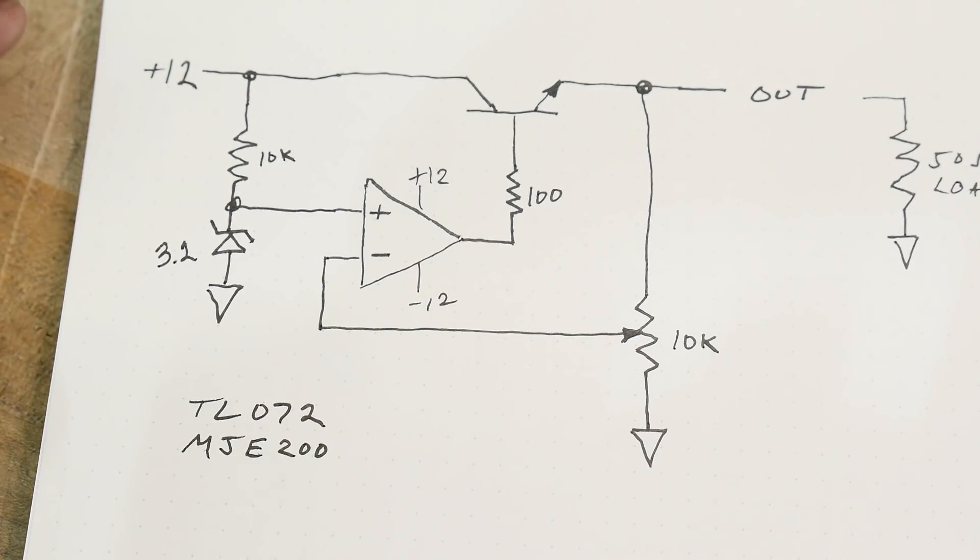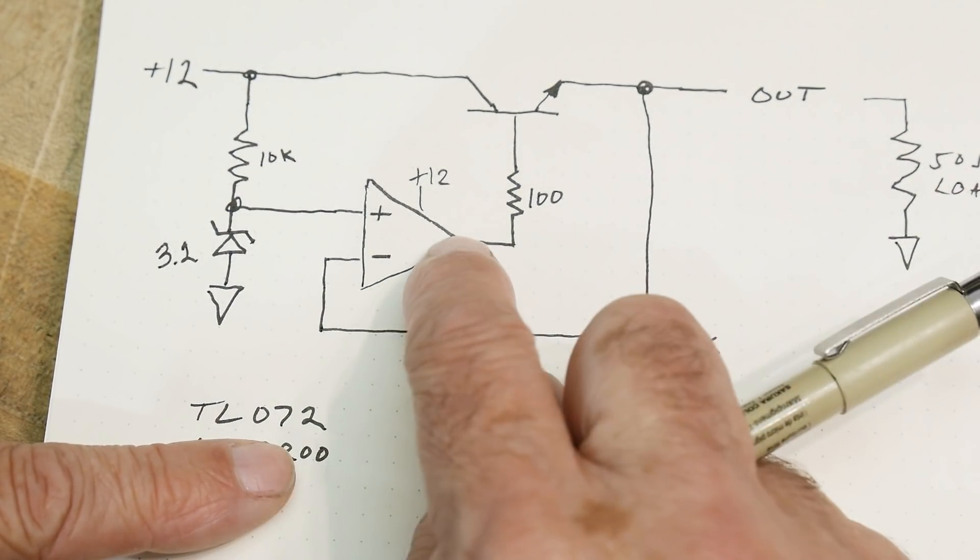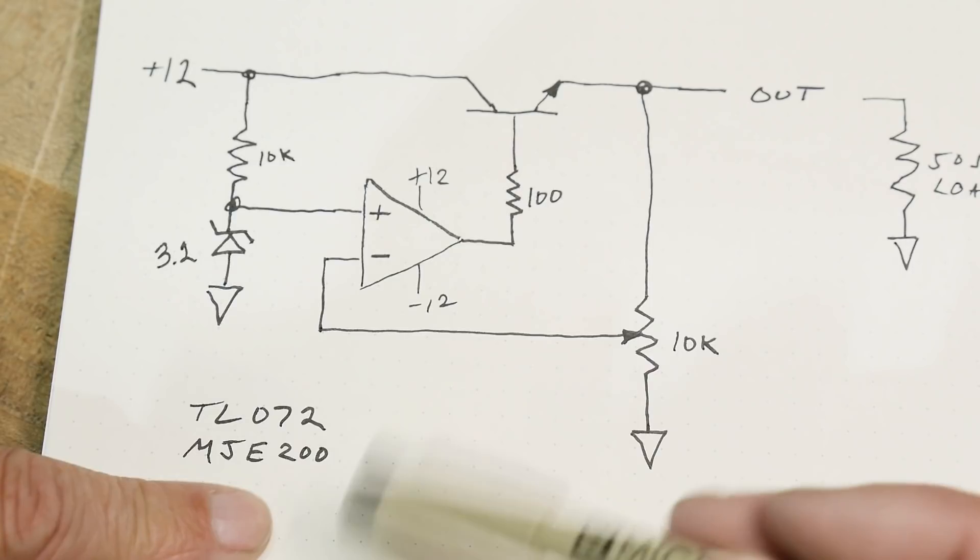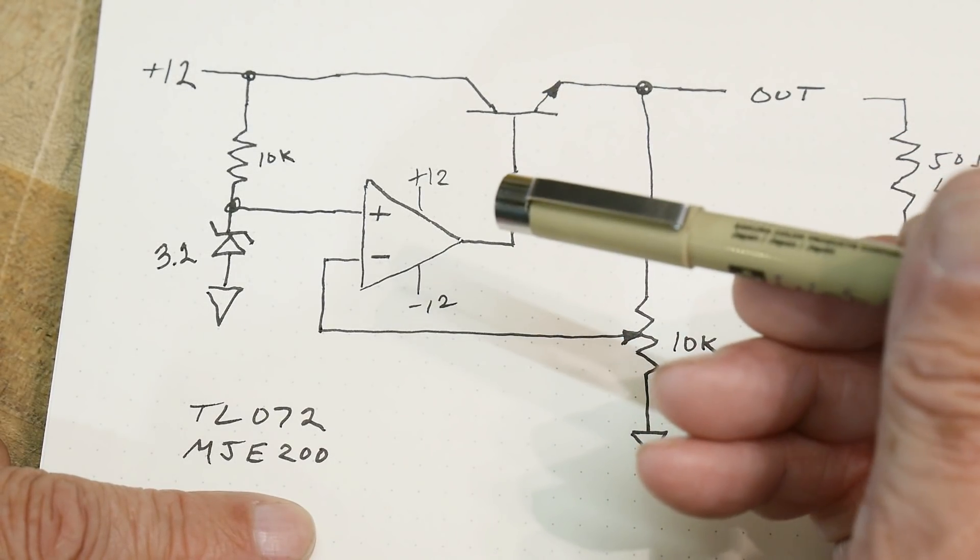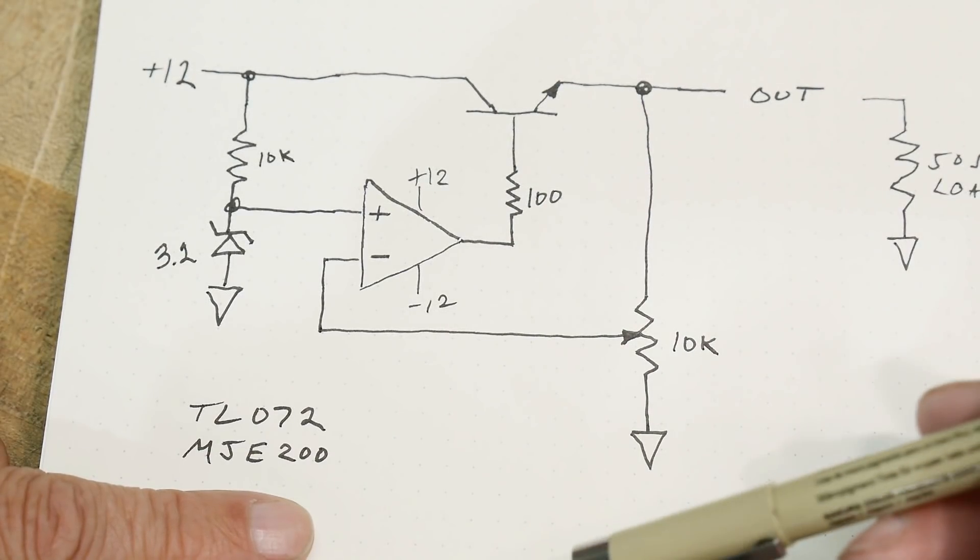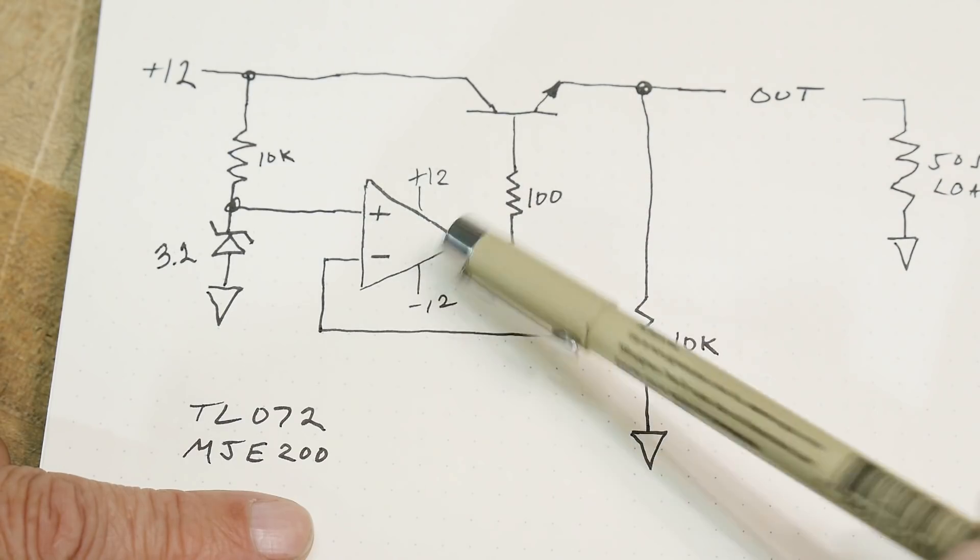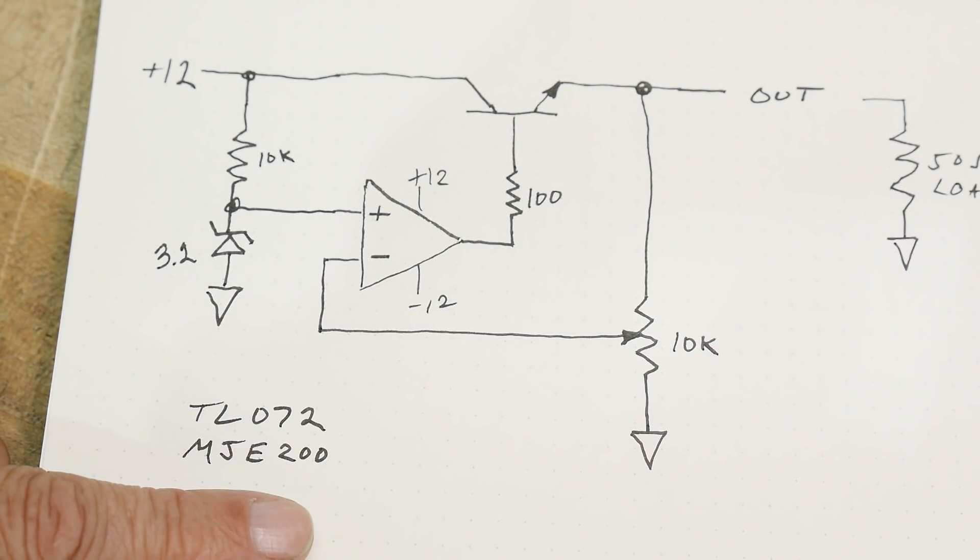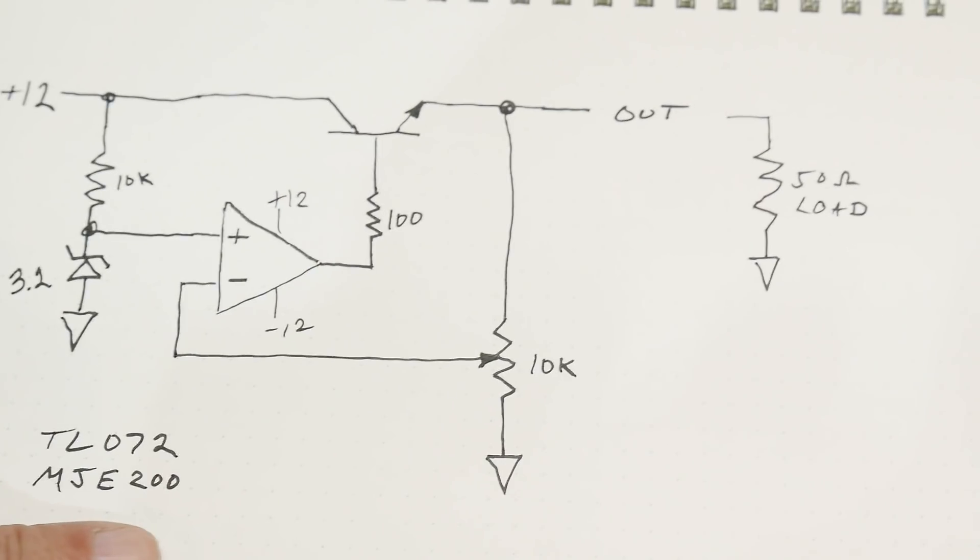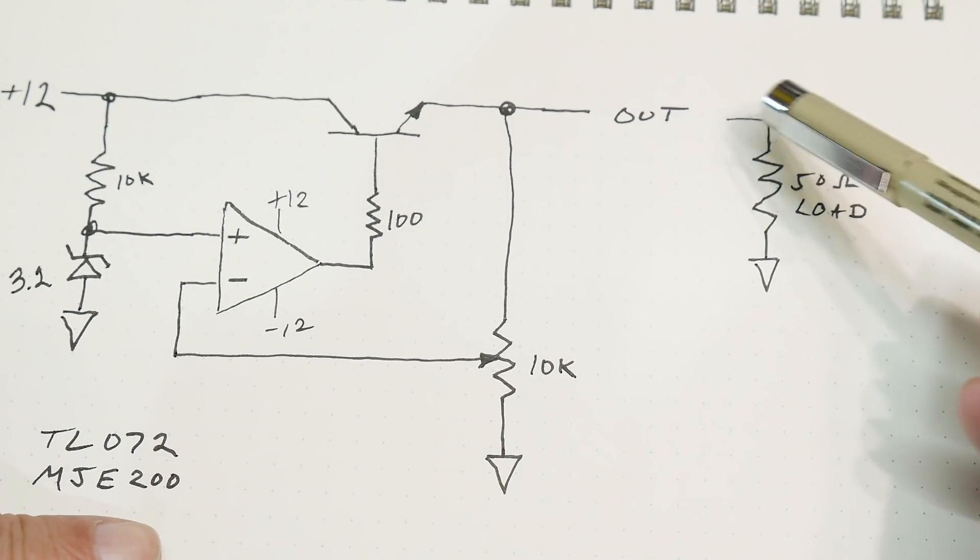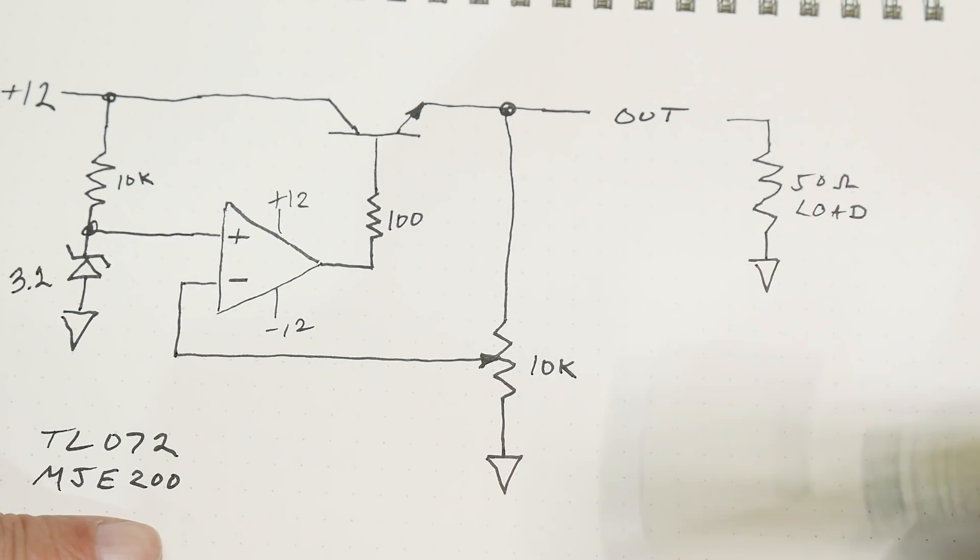Just in case you want to build one of these at home or want to know what parts I'm using: I'm using a TL072 as the op amp—it's not critical—and I'm using an MJE200, which is a 25 volt, 5 amp transistor. I measured the HFE on this transistor to be around 87. Then I'm going to load the circuit down with a 50 ohm resistor, so at 5 volts we'll have 100 milliamps.